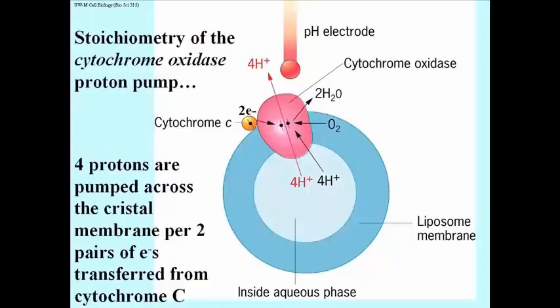We even know something about the stoichiometry of proton pumping. About four protons are pumped across the cristal membrane for every pair of electrons transferred from complex 4, also called cytochrome oxidase, to oxygen.